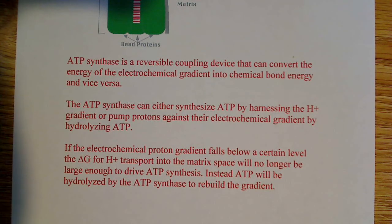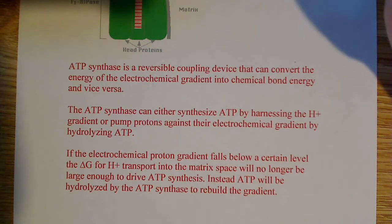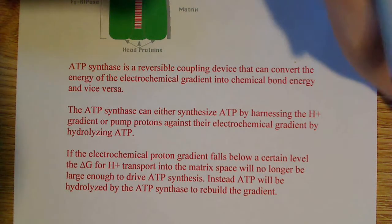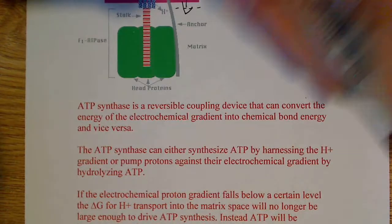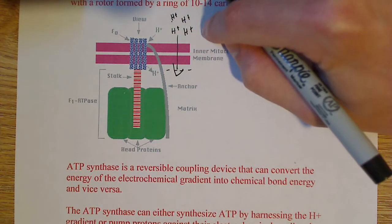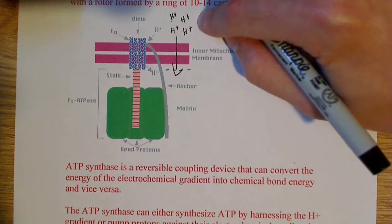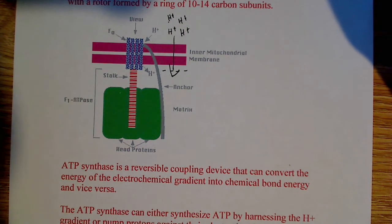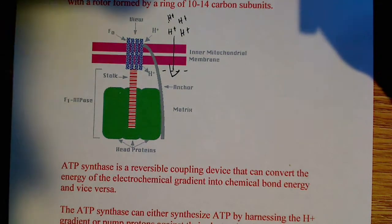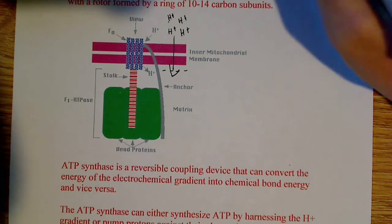This ATP synthase can either synthesize ATP by harnessing the proton gradient, or it can pump protons against their electrochemical gradient by hydrolyzing ATP. So by using the energy of ATP hydrolysis, it can actually pump protons back into the inner membrane space. In certain cases, when the free energy delta G falls below a certain value, you need to reestablish the proton gradient. Hydrolyzing ATP pumps the protons — this is active transport, moving them against their electrochemical gradient — back into the inner membrane space.